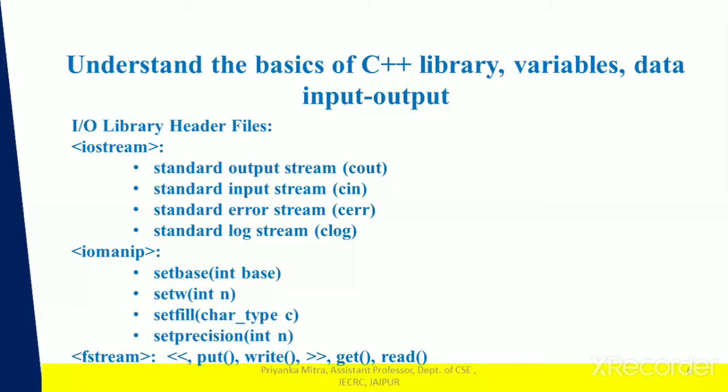Now a more elaborate description of iostream. The first is the standard output stream: cout is a predefined object and an instance of the ostream class, said to be connected to the standard output device, which is usually the display screen. The second is cin, the standard input stream: cin is an instance of the istream class and is attached to the standard input device, which is usually the keyboard.